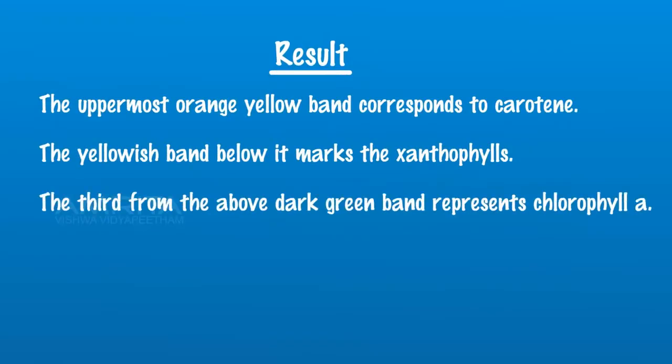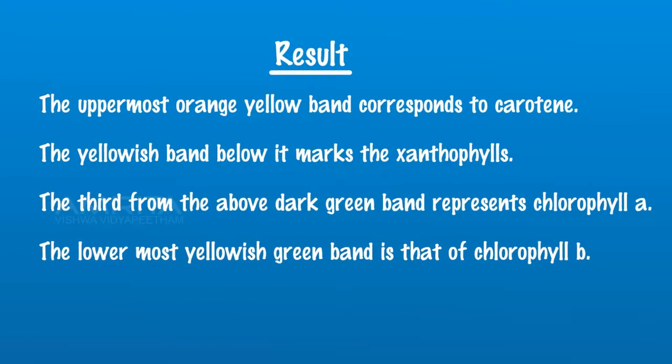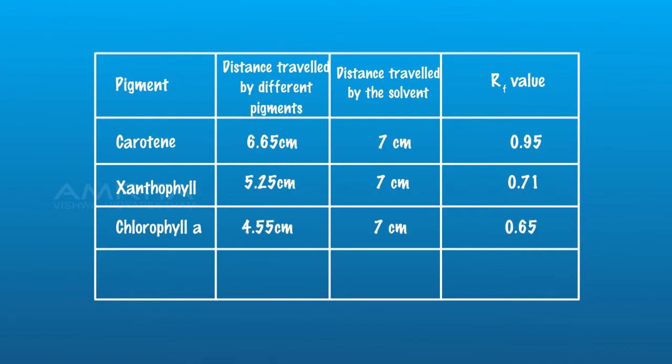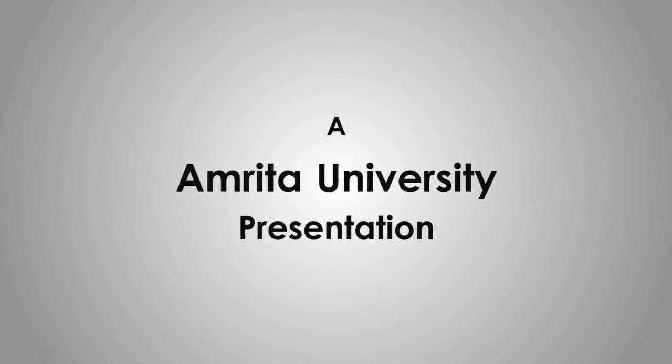Results. The uppermost orange yellow band corresponds to carotene. The yellowish band below it marks the xanthophylls. The dark green band represents chlorophyll A. The lower most yellowish green band is that of chlorophyll B. Rf value for carotene is 0.95, xanthophylls is 0.71, chlorophyll A is 0.65, and chlorophyll B is 0.45.